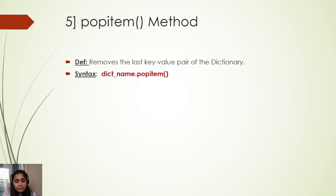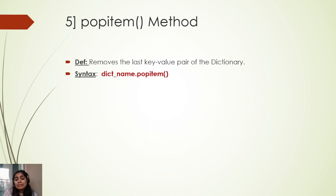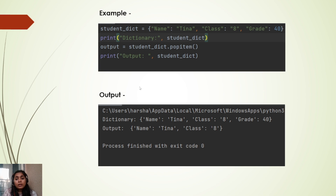The next method is popitem. Popitem is similar to pop, but unlike pop where we can specify which key-value pair to remove, popitem removes the last key-value pair available in the dictionary. The syntax is: dictionary_name.popitem().